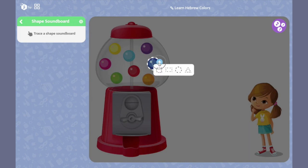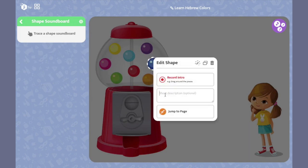Trace a shape and click the plus sign. Here you can add a soundbite, some written text, and a jump to page.